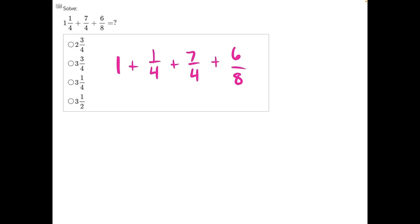To find the least common denominator between these three fractions, we need to find a number, the smallest number possible, that is divisible by all three of these numbers.